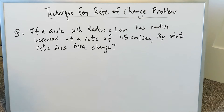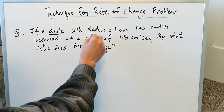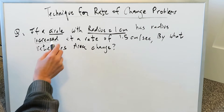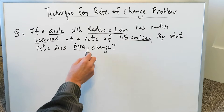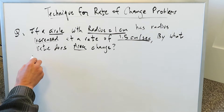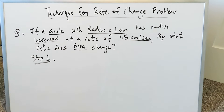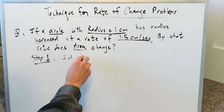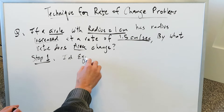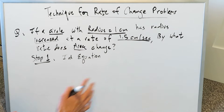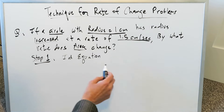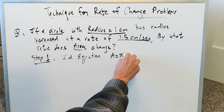Our first question: if a circle has a radius of one centimeter and that radius is increased at a rate of 1.5 centimeters per second, by what rate does the area change? We're looking at a circle where the radius is one centimeter, increasing at 1.5 centimeters per second, and we need to find by what rate the area changes.